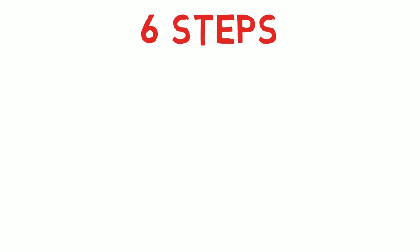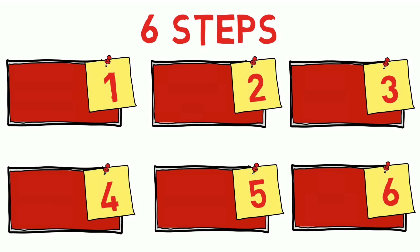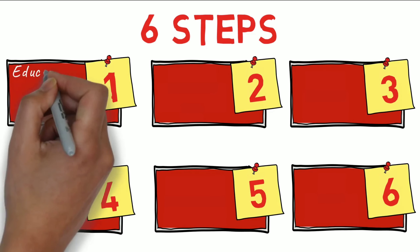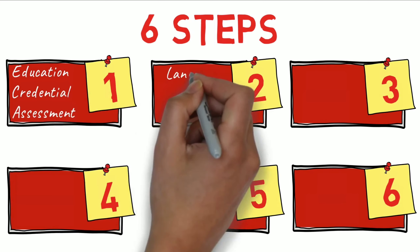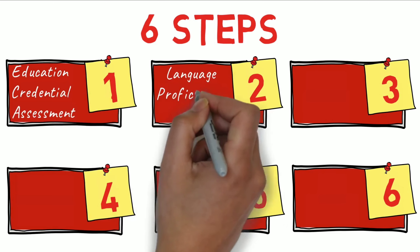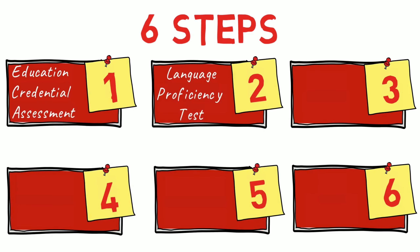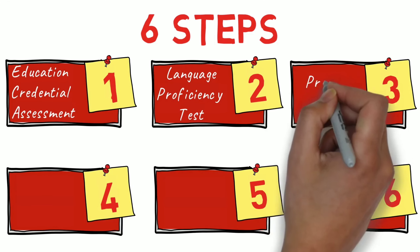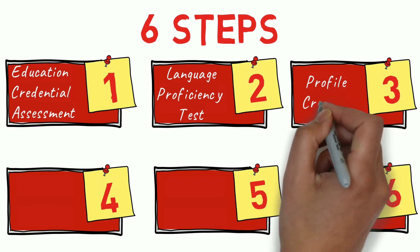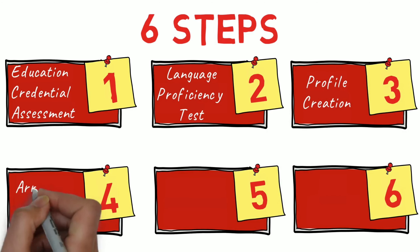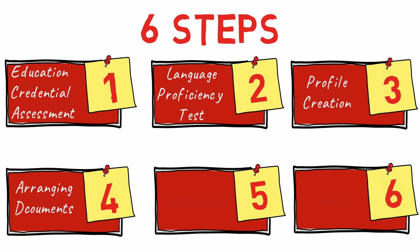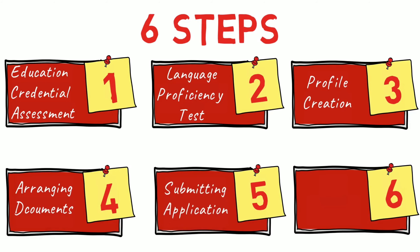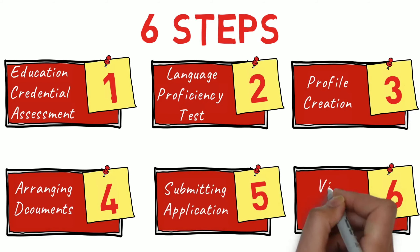This process is divided into six different steps. The first one is Credential Evaluation, the second is Language Test, the third is Profile Creation, the fourth is Arranging the Required Documents, the fifth is Submitting the Application, and finally Stamping.